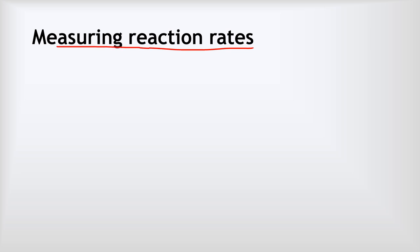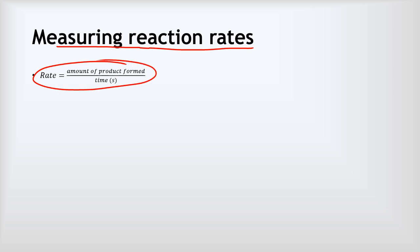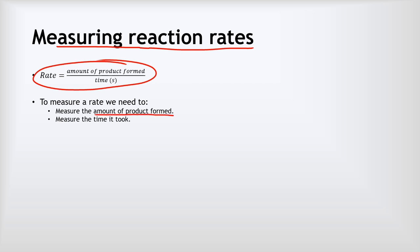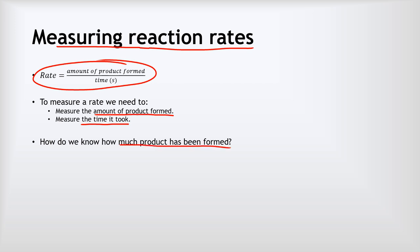The rate of a reaction is the amount of product formed divided by the time it took. To measure that rate, we need to know the amount of product that's been formed, and measuring the time is easy — we just use a stopwatch. The key question is: how do we know the amount of product that has been formed? To do that, we need some kind of observable, measurable change, and exactly what method we use depends on the details of the particular reaction.